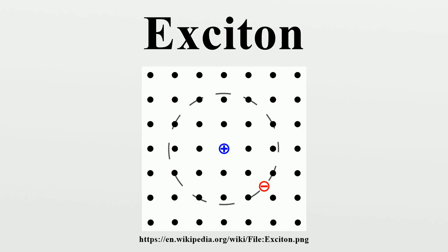In semiconductors, the dielectric constant is generally large. Consequently, electric field screening tends to reduce the Coulomb interaction between electrons and holes. The result is a Wannier-Mott exciton, which has a radius larger than the lattice spacing. Small effective mass of electrons typical of semiconductors also favors large exciton radii. As a result, the effect of the lattice potential can be incorporated into the effective masses of the electron and hole. Because of the lower masses and the screened Coulomb interaction, the binding energy is usually much less than that of a hydrogen atom, typically on the order of 0.01 electron volts. This type of exciton was named for Gregory Wannier and Neville Francis Mott. Wannier-Mott excitons are typically found in semiconductor crystals with small energy gaps and high dielectric constants, but have also been identified in liquids such as liquid xenon.